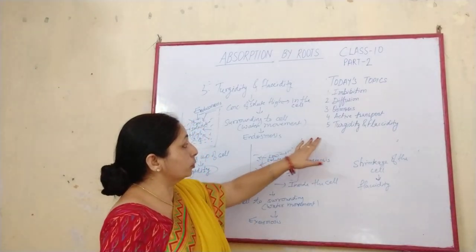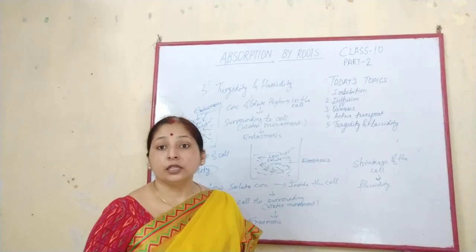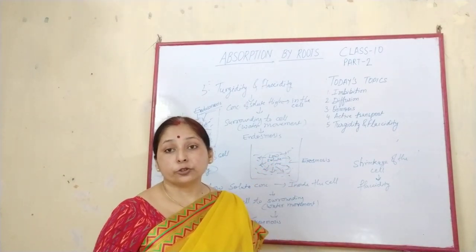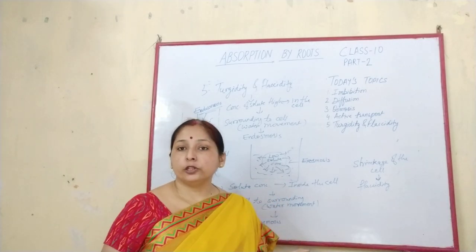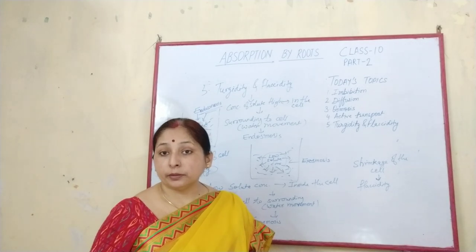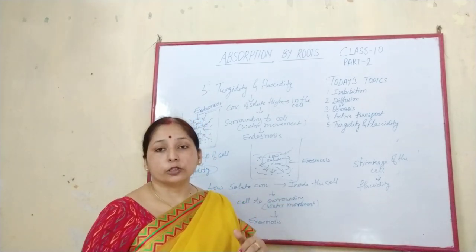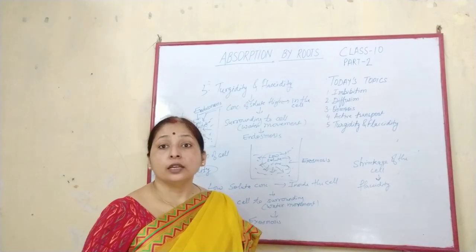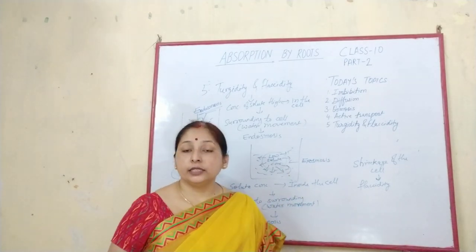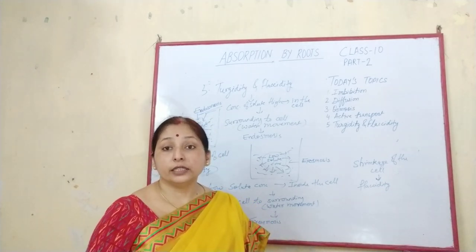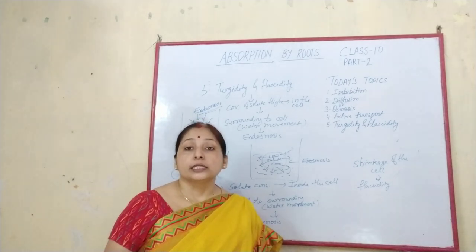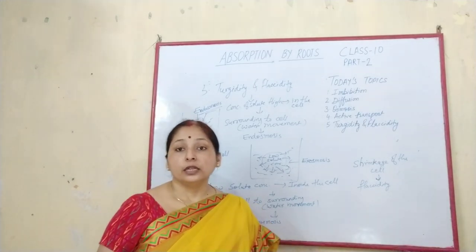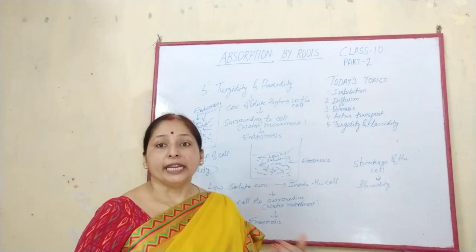Let's do a quick revision. Imbibition is a surface phenomenon for substances with a strong affinity for water. Diffusion and osmosis both involve movement from higher to lower concentration; in osmosis, a semi-permeable membrane is required and only liquid molecules are involved, while diffusion applies to all three states of matter. Active transport is movement against concentration gradient, utilizing energy. Turgidity is the fully filled stage of a cell due to endosmosis; flaccidity is the shrinkage of cell membrane due to exosmosis. Thank you — in the next video, we will discuss these phenomena in more detail.